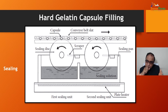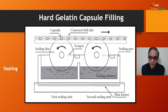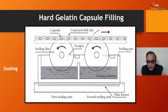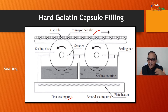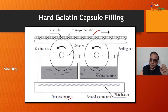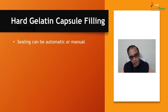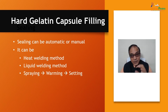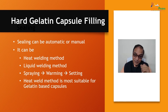After ejection, sealing discs move the capsules along a conveyor belt through sealing units. There are two sealing units with a plate heater. As capsules move through the sealing pan, the body and cap are sealed with slight heat due to the movement of the sealing disc. Sealing can be automatic or manual, using heat welding or liquid welding methods. The heat weld method is most commonly used and most suitable for gelatin-based capsules.